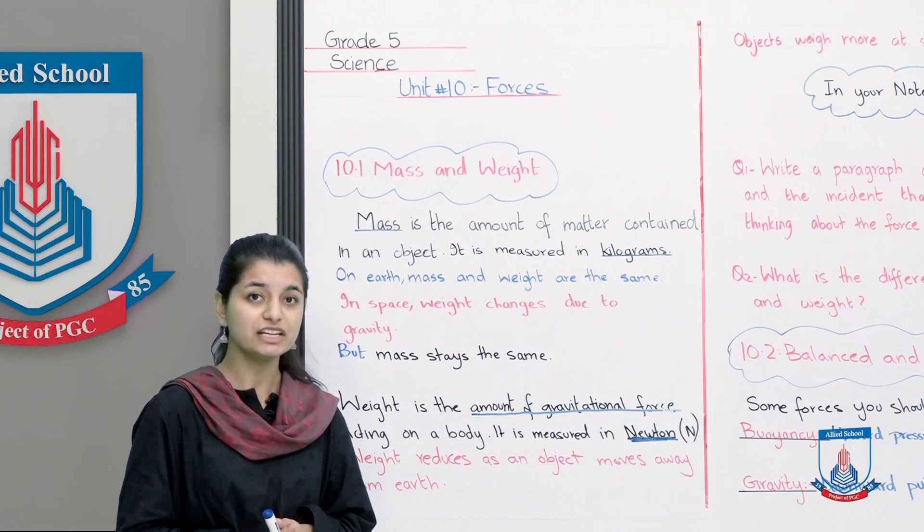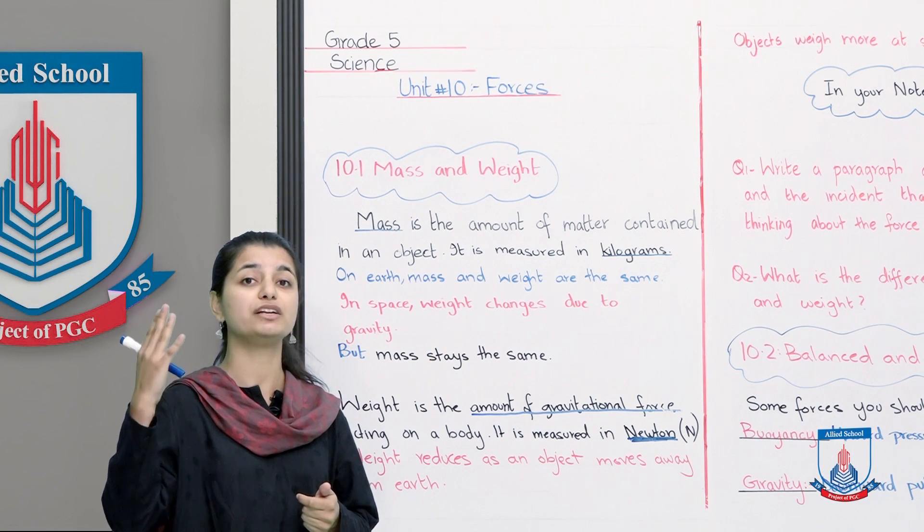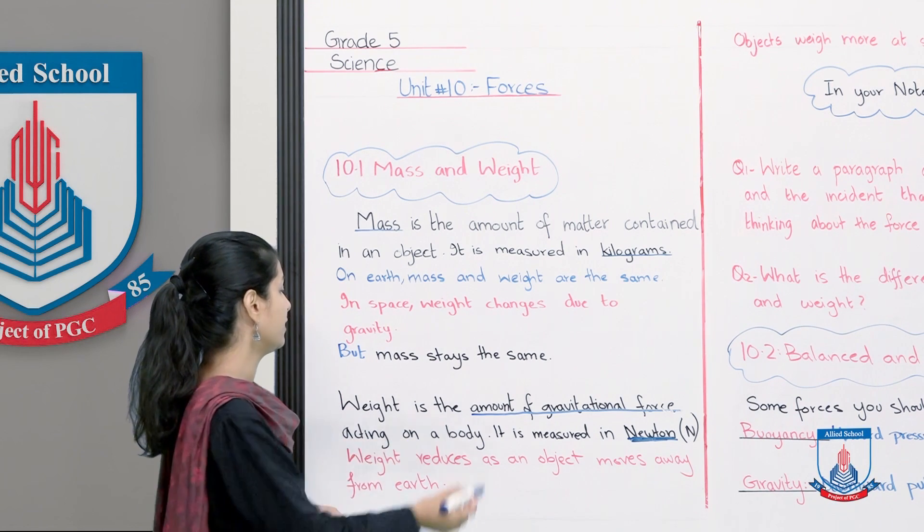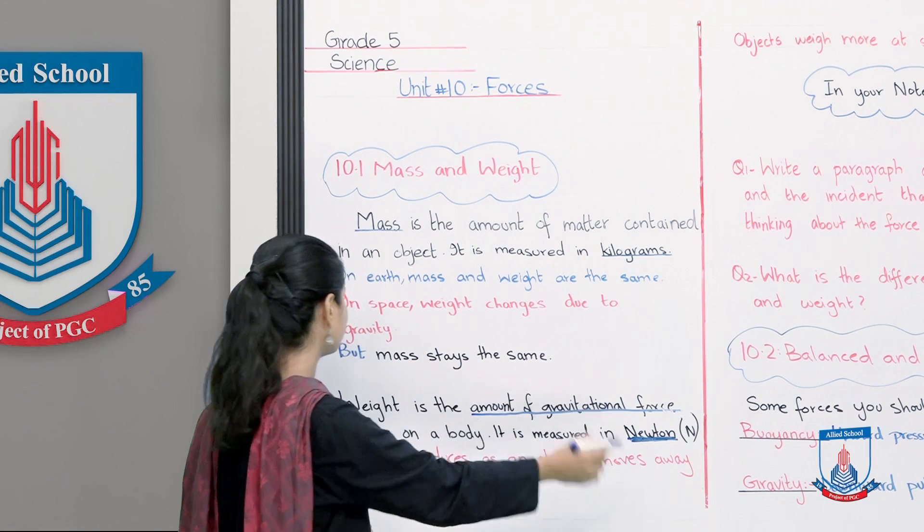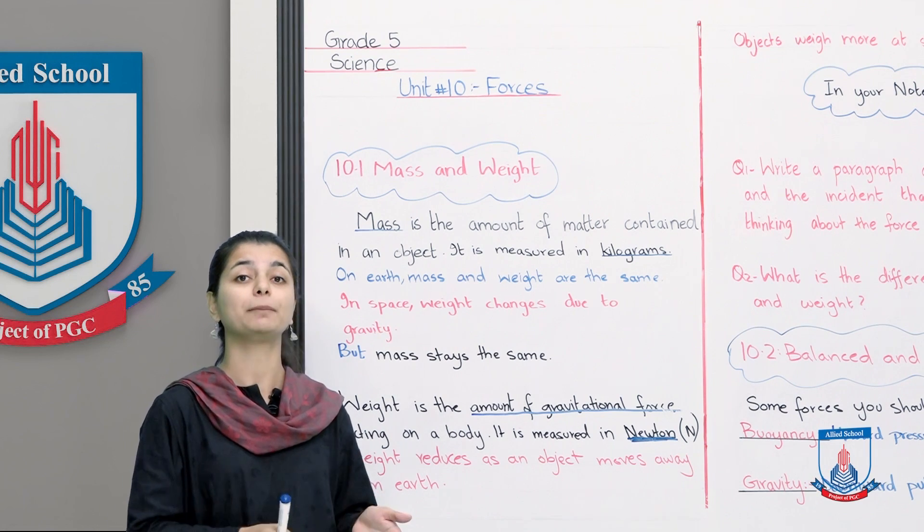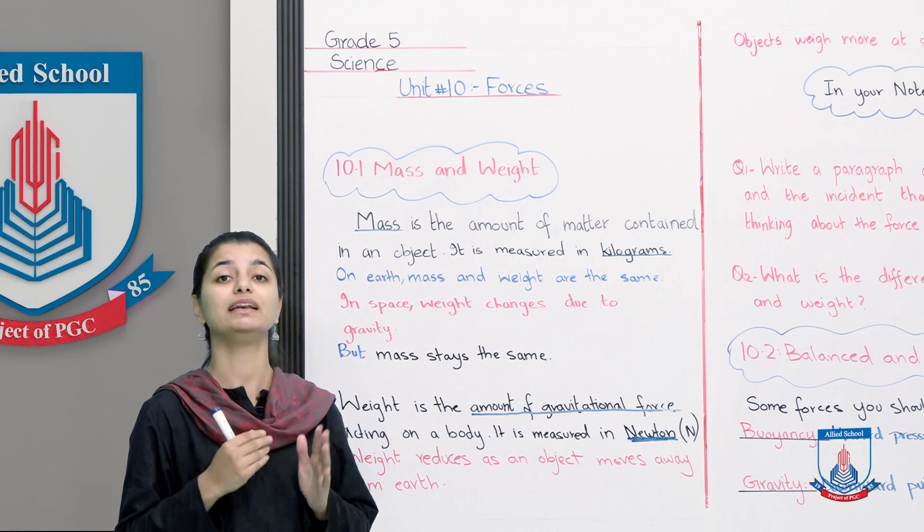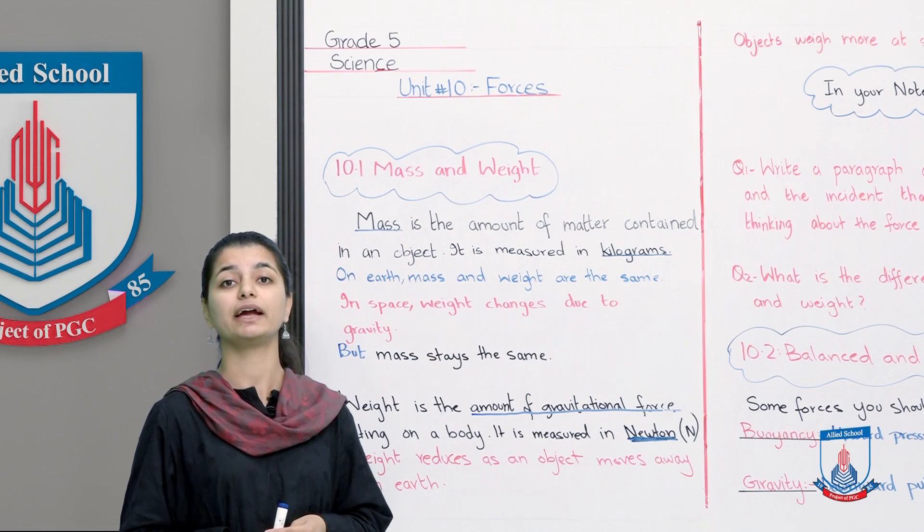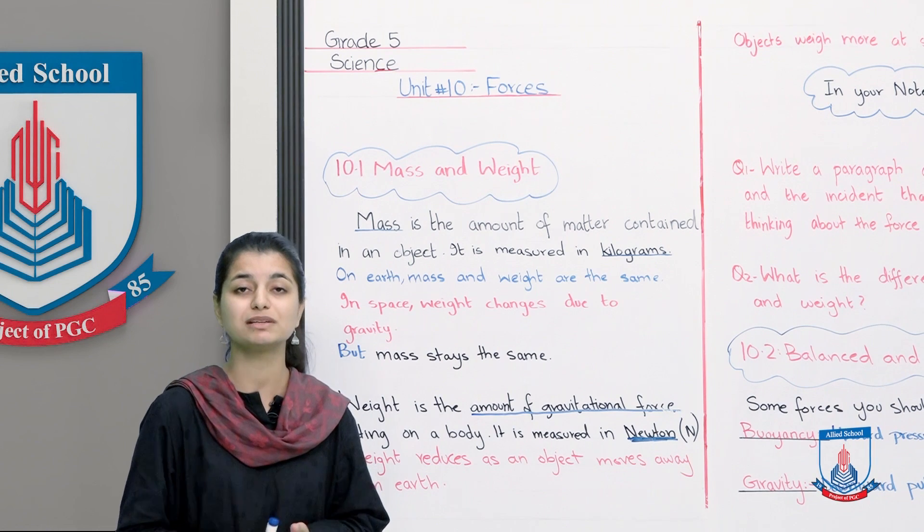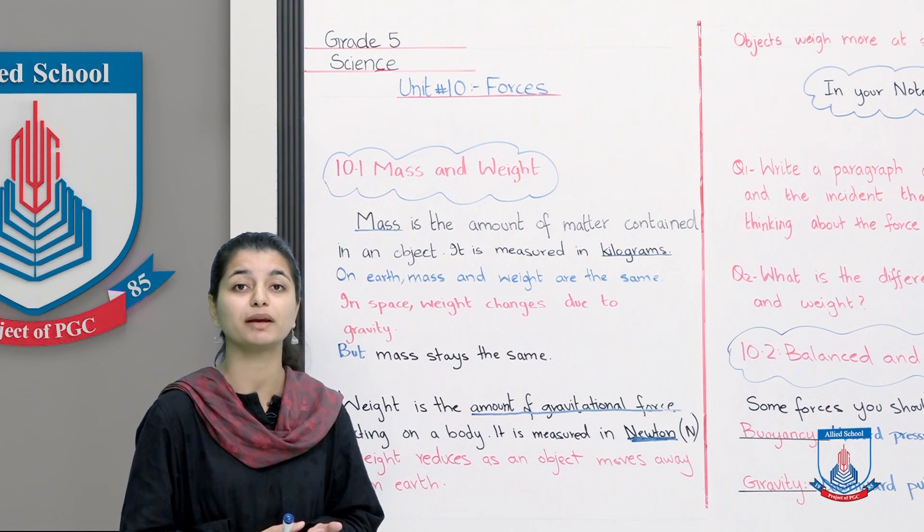Mass and weight are the same only on earth. Weight is the amount of gravitational force acting on a body, it is measured in newtons. So almost the same thing that you were saying ki 45 kg hi mera mass hai, 45 kg hi mera weight hai, but we are saying that their definitions are completely different.